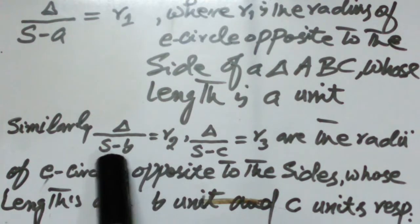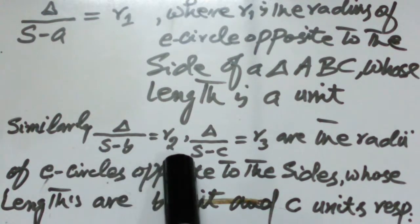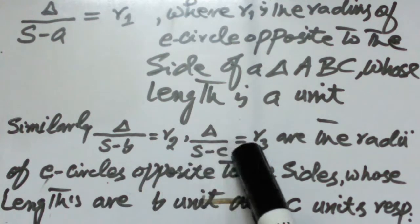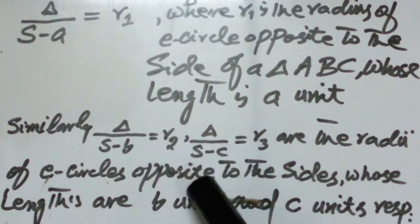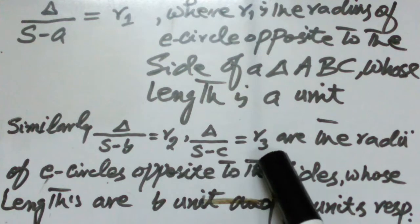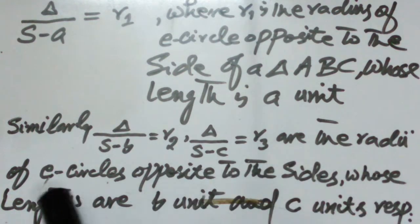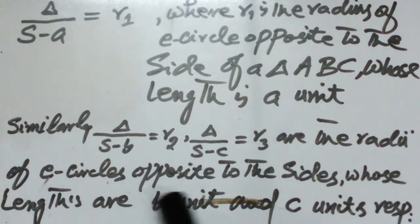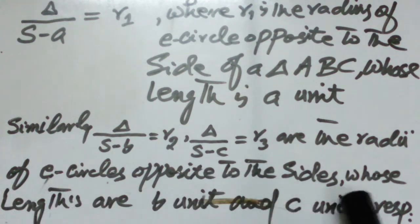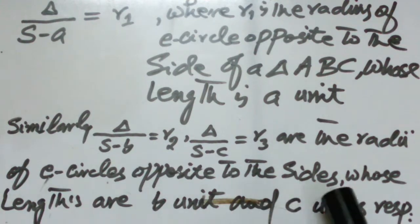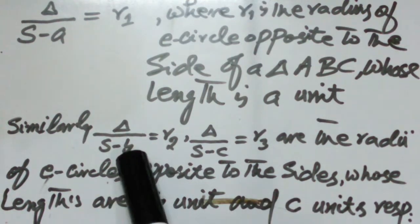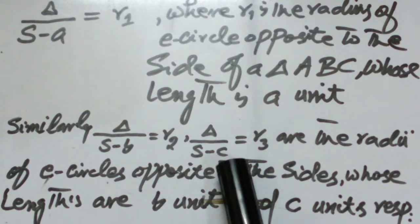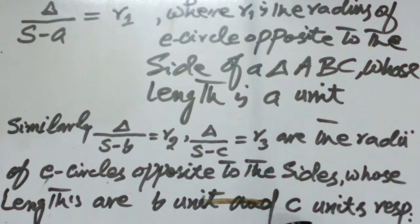Similarly, R2 equals delta divided by (S minus b), and R3 equals delta divided by (S minus c), which are the radii of the excircles opposite to the sides of length b and c respectively.